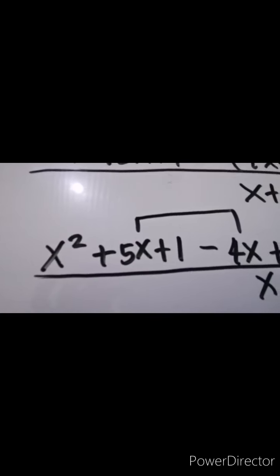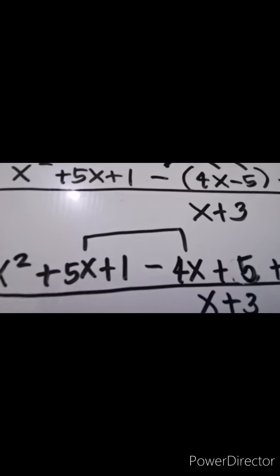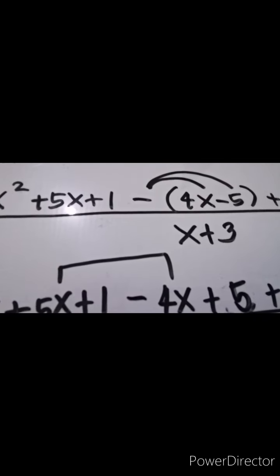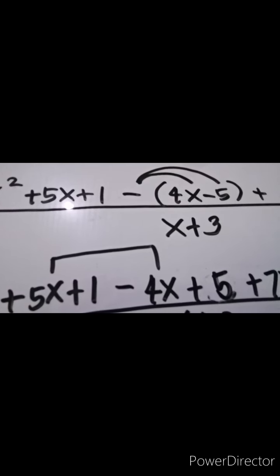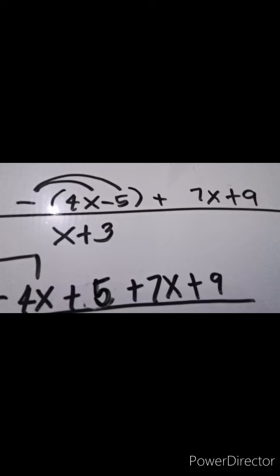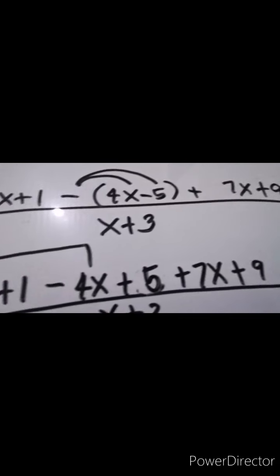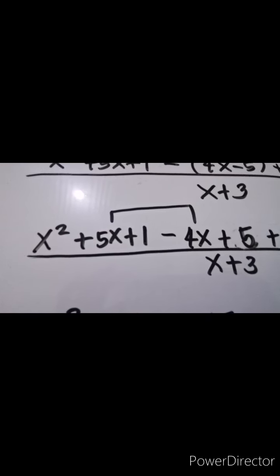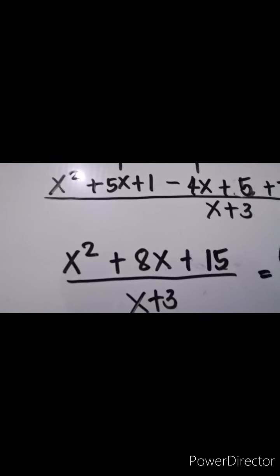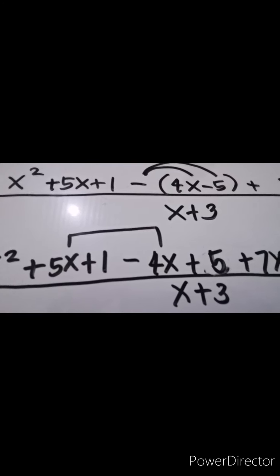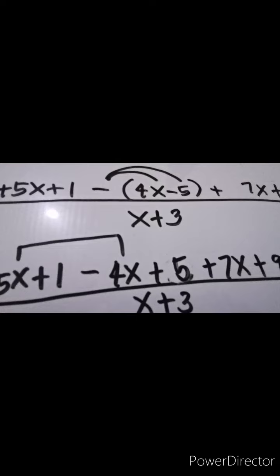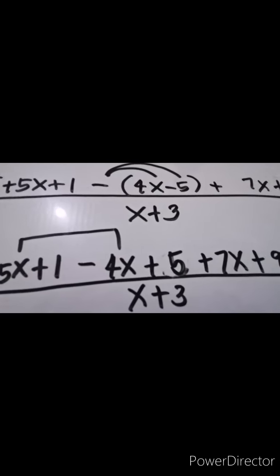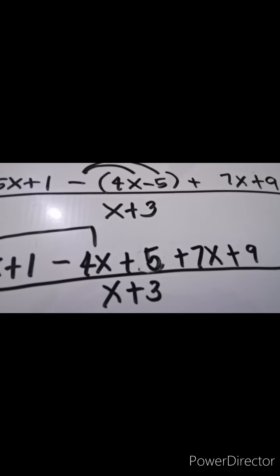Next, simplify the middle. We have x squared plus 5x plus 1. Negative times positive 4 is negative 4x. Negative times negative 5 is positive 5. Then just copy 7x plus 9. Next, combine like terms: x squared just copy. Then 5x minus 4x plus 7x gives us 8x. Then 1 plus 5 is 6, plus 9, so we have 15.